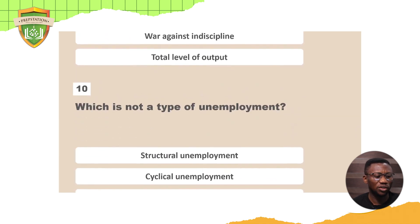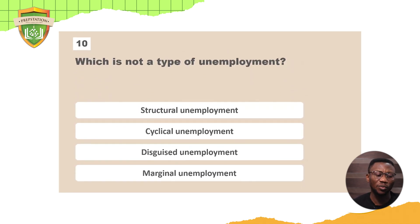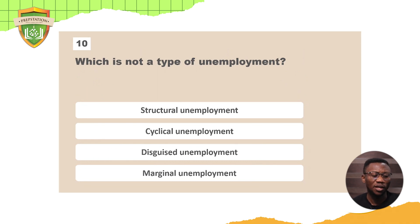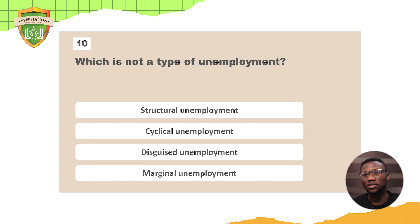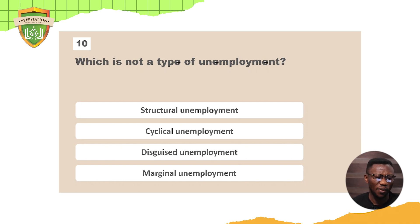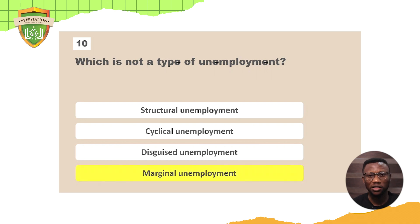The last question: which is not a type of unemployment — structural unemployment, cyclical unemployment, disguised unemployment, or marginal unemployment? We covered structural and cyclical. Disguised unemployment is a kind of unemployment that exists but people think it's not there. Marginal unemployment is a word that barely exists in the economic dictionary. So the answer is marginal unemployment.